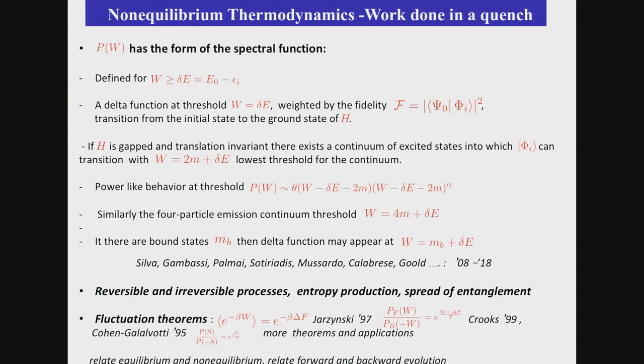The work to begin with has to be larger than delta E, which is the difference between final ground state of the final Hamiltonian minus ground state, minus the energy of the initial state. And there is going to be a delta function when the work is at this point, it's weighted by the fidelity, which is the overlap square between initial and ground state. And if the Hamiltonian is gapped, then there would be a continuum of excited states into which phi i can transition, and we have to add to delta E the minimum amount of 2m, and then from there on we'll have a continuum of states of two particle spectrum. So there will be power-like behavior that one expects with some critical exponent alpha.